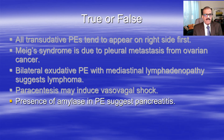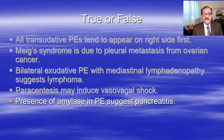Presence of amylase in pleural effusion suggests pancreatitis - yes, that's true. Pancreatitis is one of the causes of unilateral left-sided or bilateral pleural effusion. If there is unilateral left-sided pleural effusion and the amylase level is high, that would suggest the diagnosis of pancreatitis.